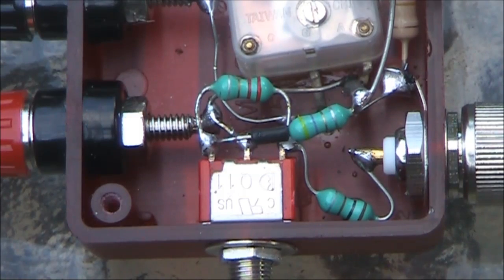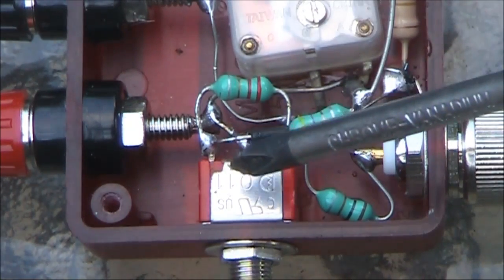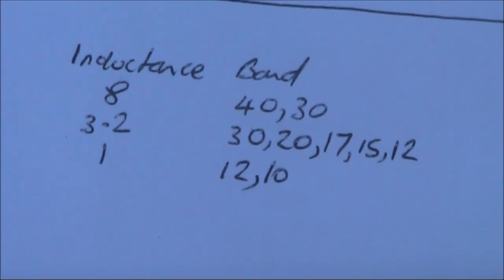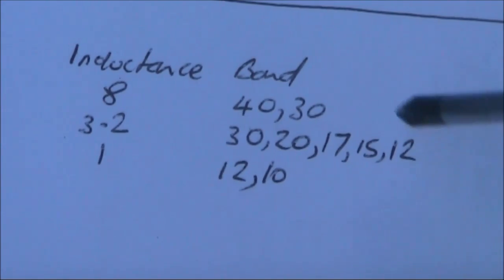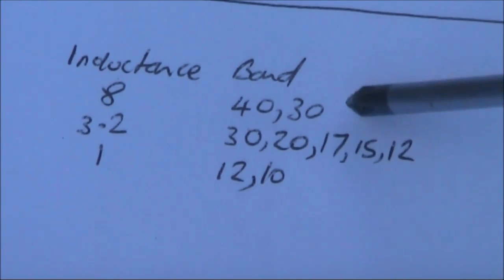You use the coupler by listening first of all, and adjusting the switch and variable capacitor for the highest noise. At that point, you should be fairly close to tuned up. The results will vary depending on what type of antenna you're using, but these are the rough switch positions, the bands, and the bands they correspond to.